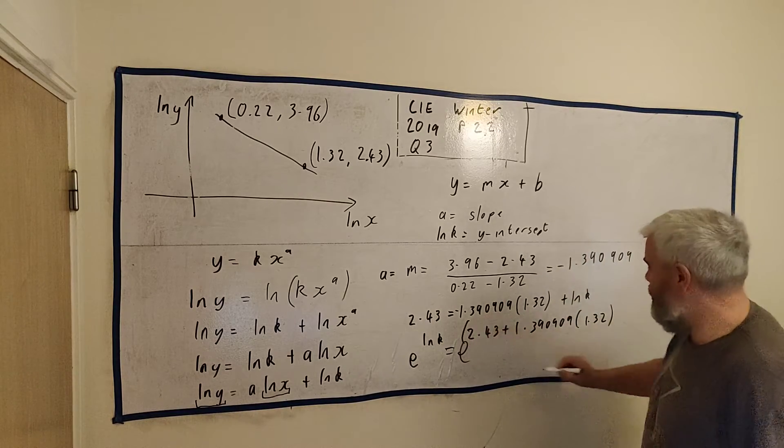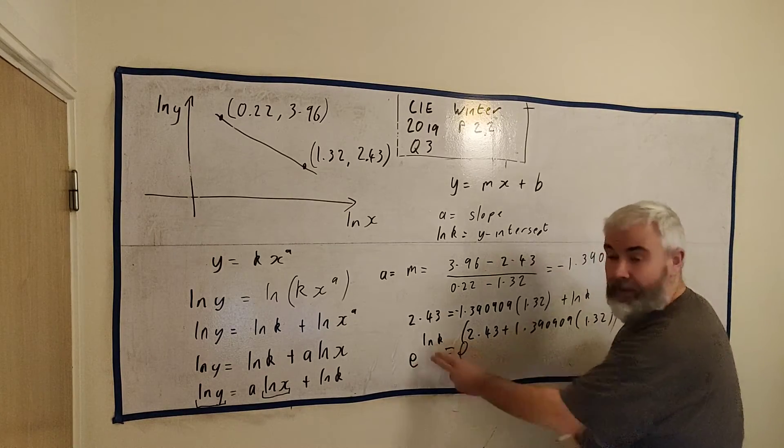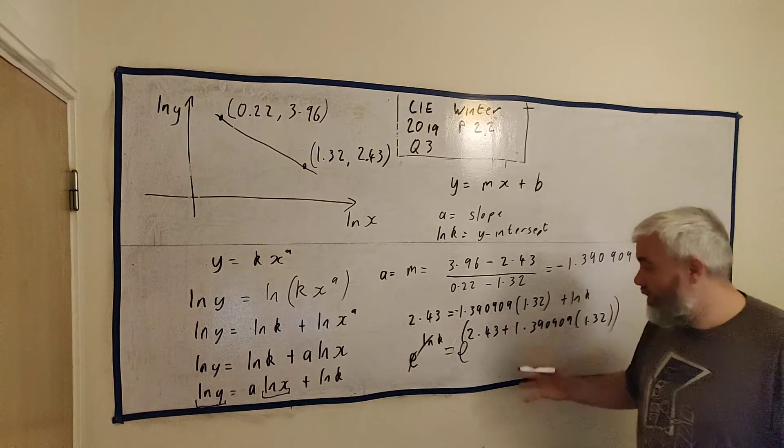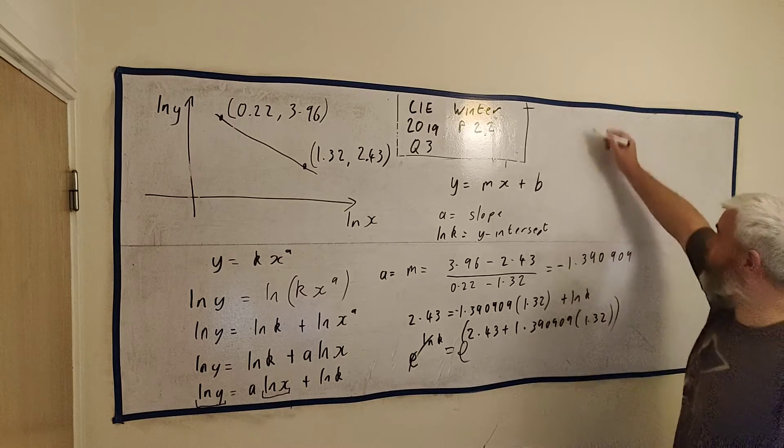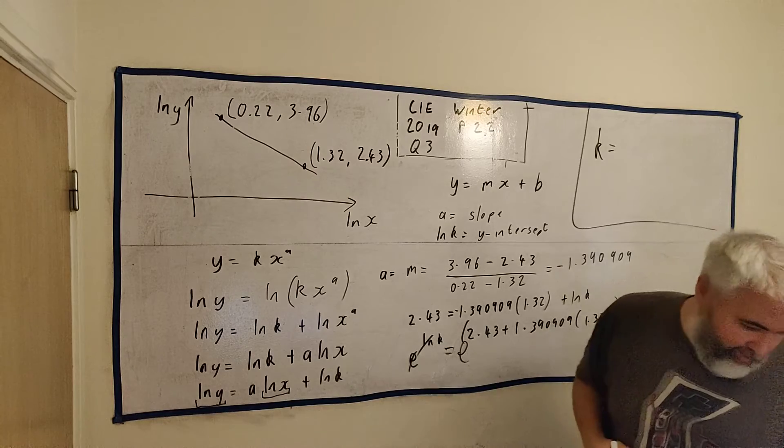Put them both to the power of e. Make sure that's all in one big bracket. And e and natural log cancel each other. So now I just have k equals all of this. So you just need to put all of that in on a calculator. Let me write it up here.